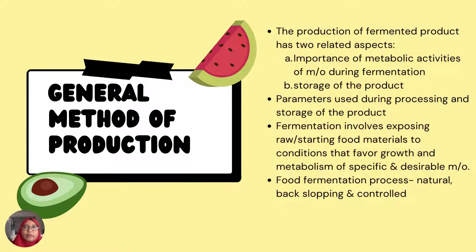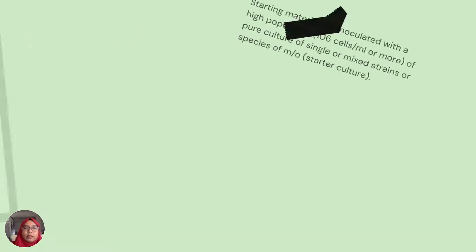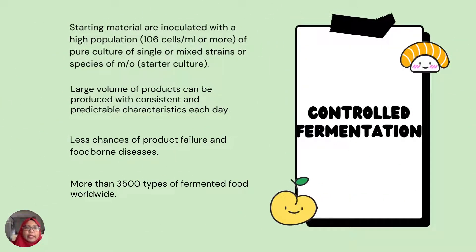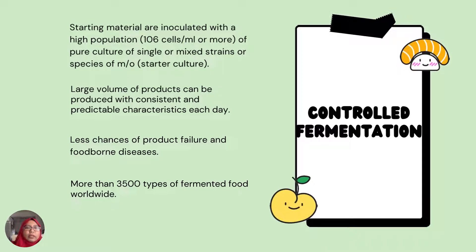For example, when we want to produce tempeh, we ferment the soybean with the exact desired microorganism so that the microorganism will produce tempeh, and we store the tempeh at the desired temperature. Food fermentation processes can be natural, back-slopping, or controlled. The starting materials are inoculated with a high population — 10 to the power of 6 cells per mL or more — of pure cultures of single or mixed strains of microorganisms, which is the starter culture.